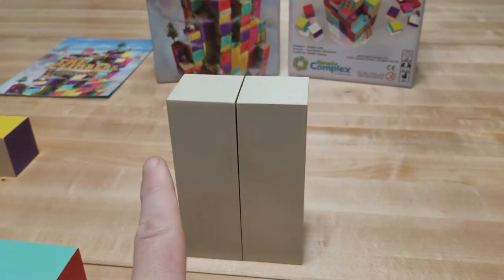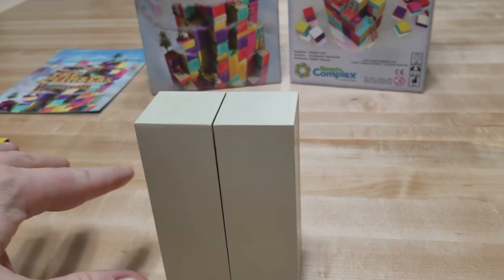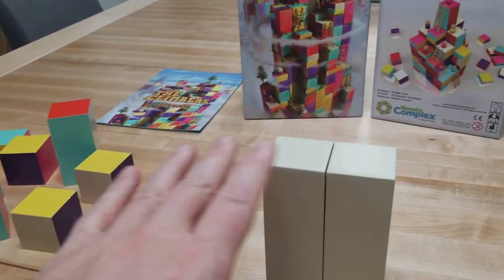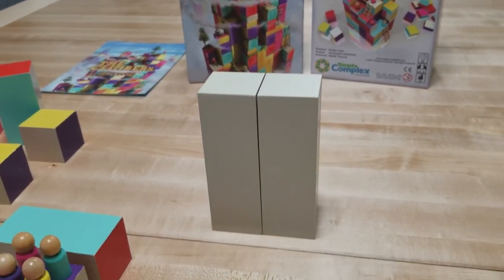The first thing you'll do is take these two large white pieces, put them side by side, and now you're randomly going to place all the other blocks around these center pieces until they're completely covered.